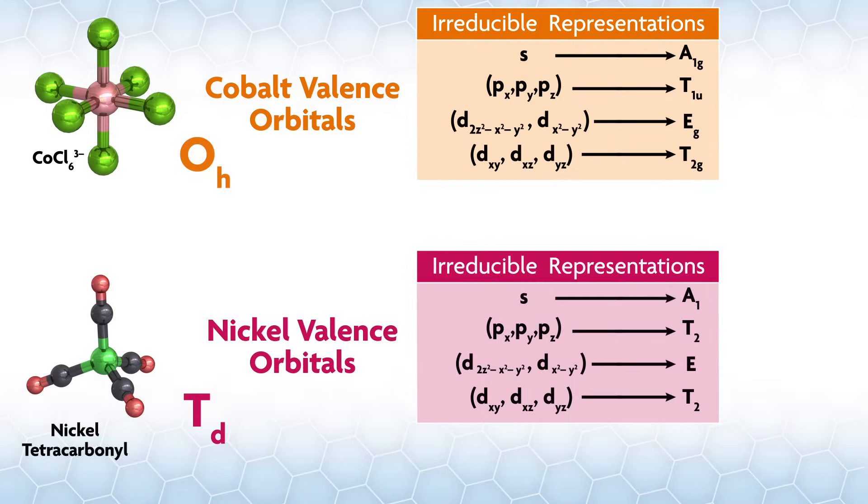Notice what happens on going from Td to Oh for the transition metal. The s and d orbitals went from A1, E, and T2 to A1g, Eg, and T2g. All we did was add a g to the irreducible reps.